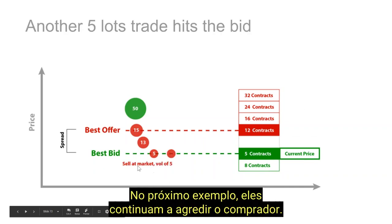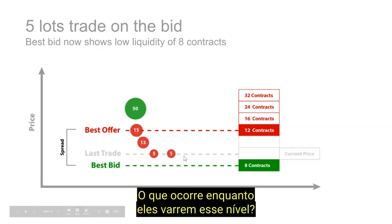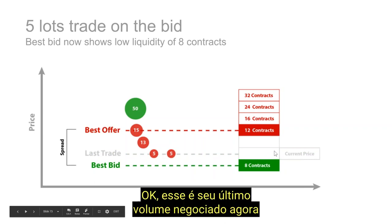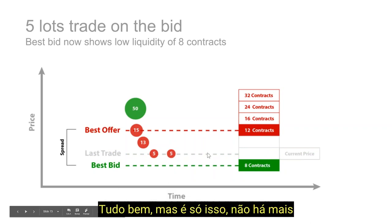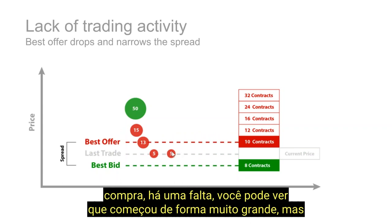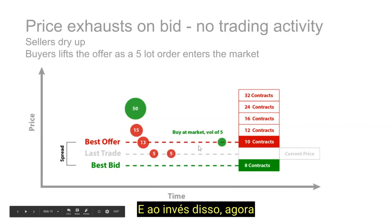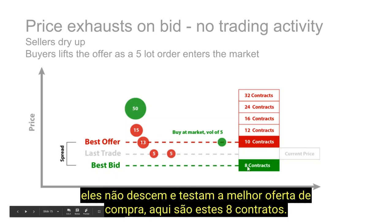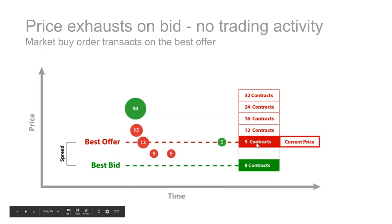They continue to hit the bid. Another sell of 5 occurs — they sweep that level, trading down here on the best bid into these 8 contracts. But that's it — there's no more. There's a lack: it started off as pretty big but started to dry up at some of these lower levels. Instead now, they don't come down and test the best bid here of these 8 contracts — instead they market buy with a volume of 5, lifting the offer into these 10 contracts, and that becomes the current price.